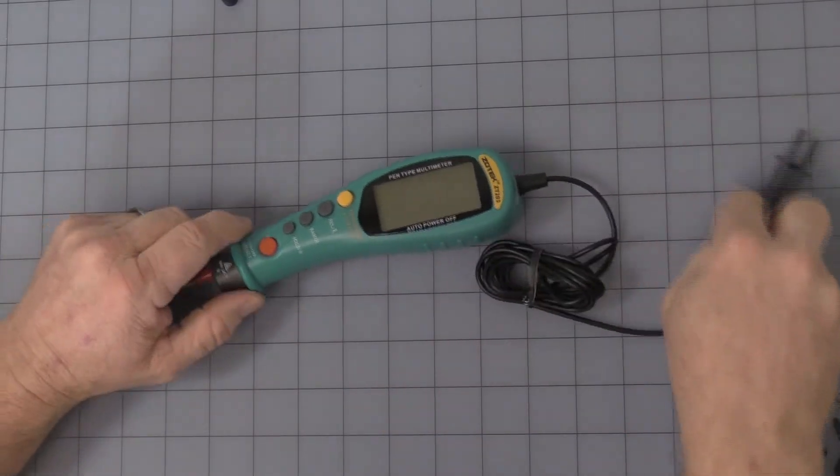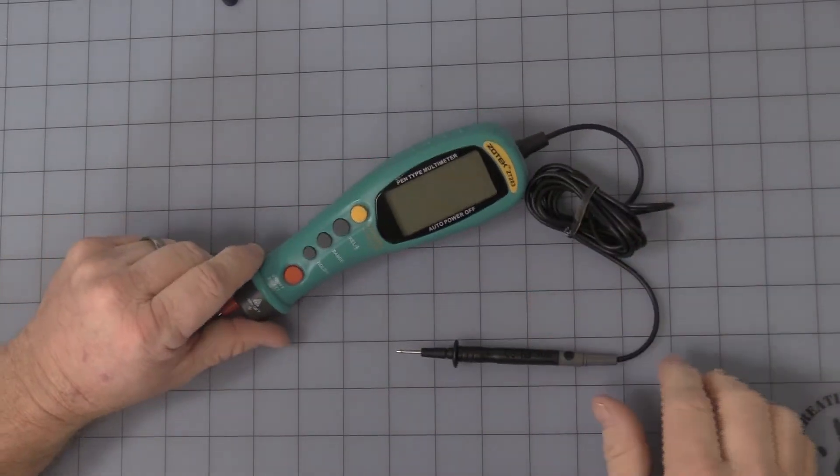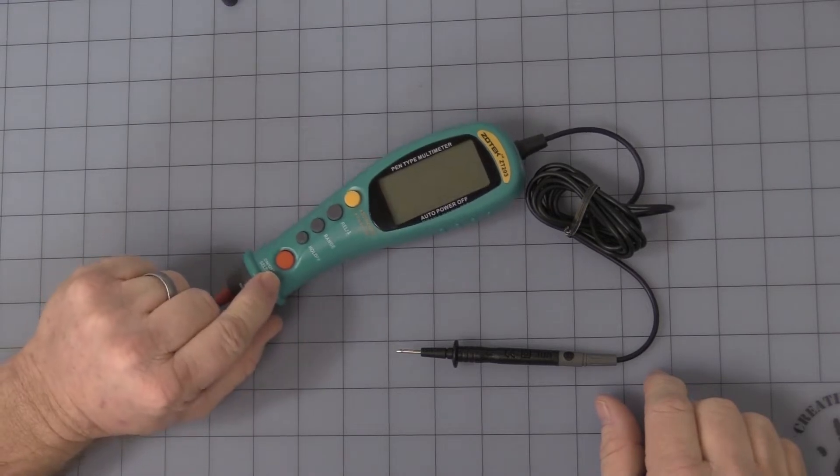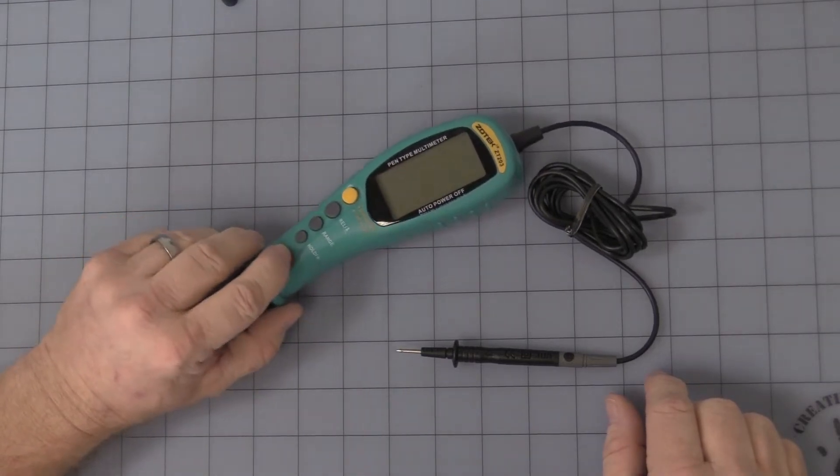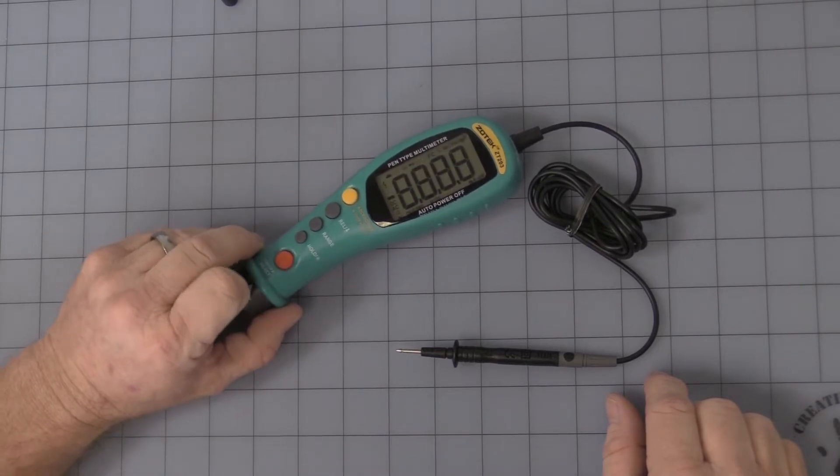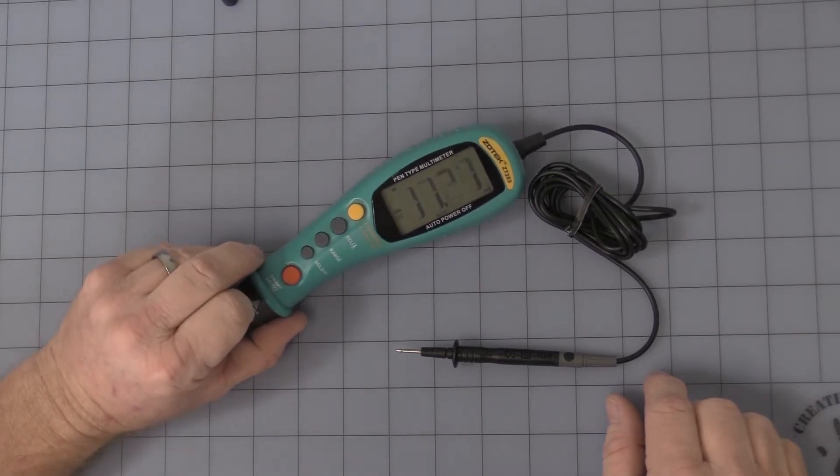Okay, I'm going to just quickly go through the different features just so you can see it working. To start with you have the red button, that is the on off, press and hold, turns the unit on.